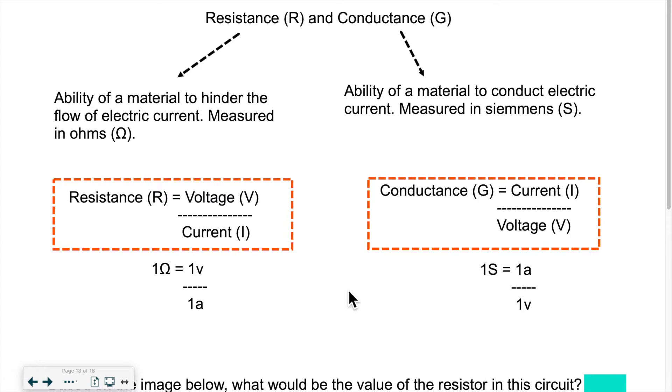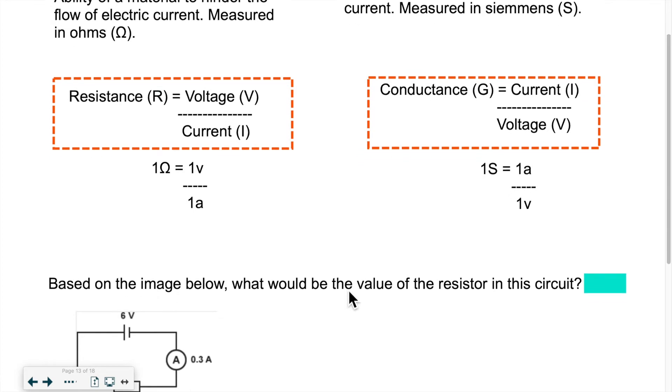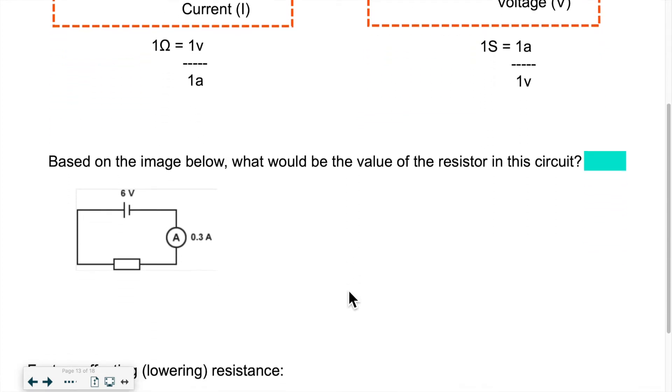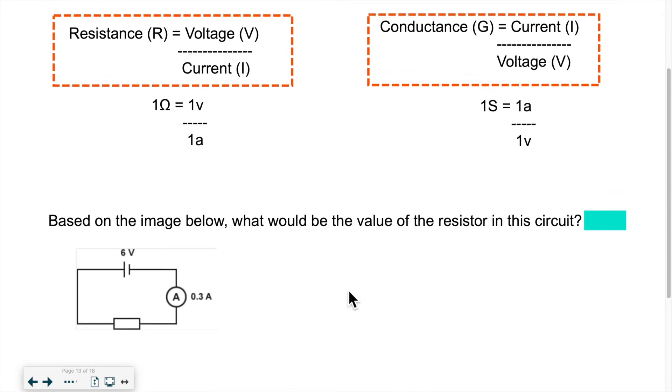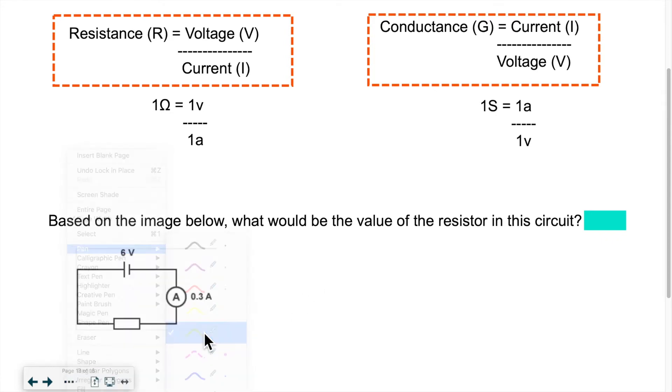So mathematically, what could this look like? What kind of problems or question could you get? So these are basic questions. Based on the image below, let's keep the equation at the top here. Based on the image below, what would be the value of the resistor in this circuit?